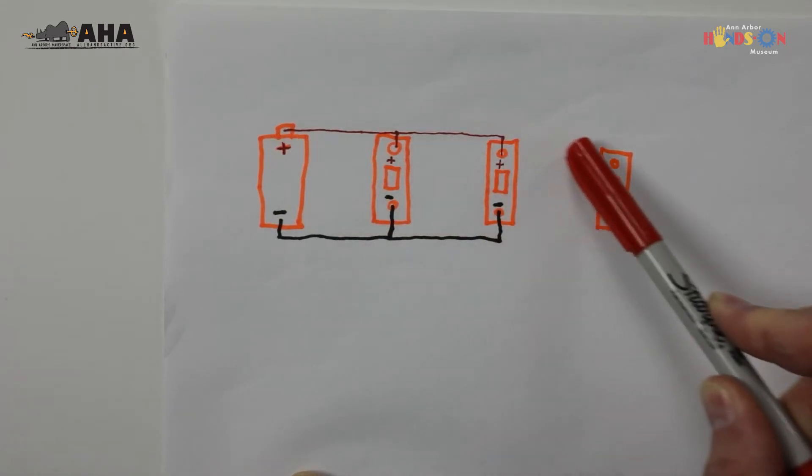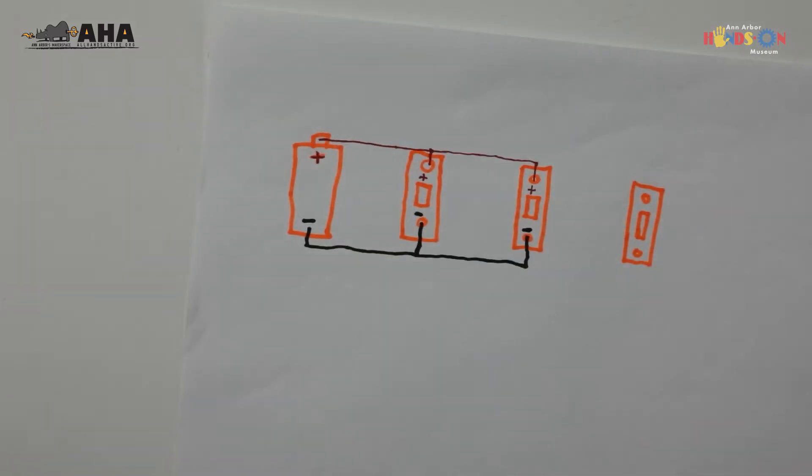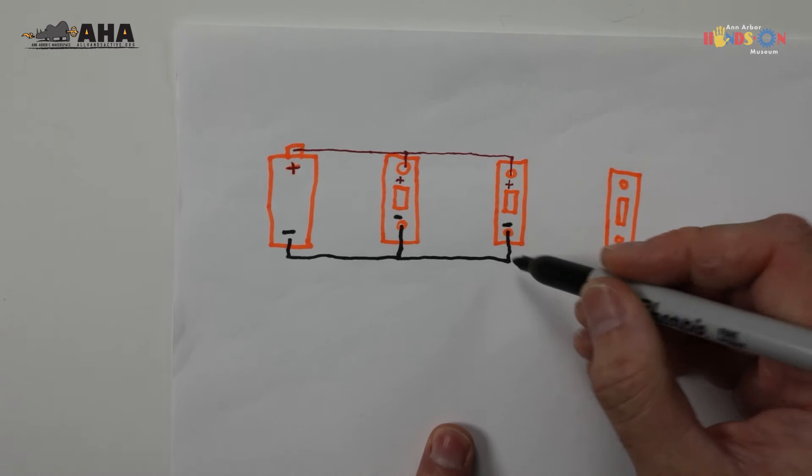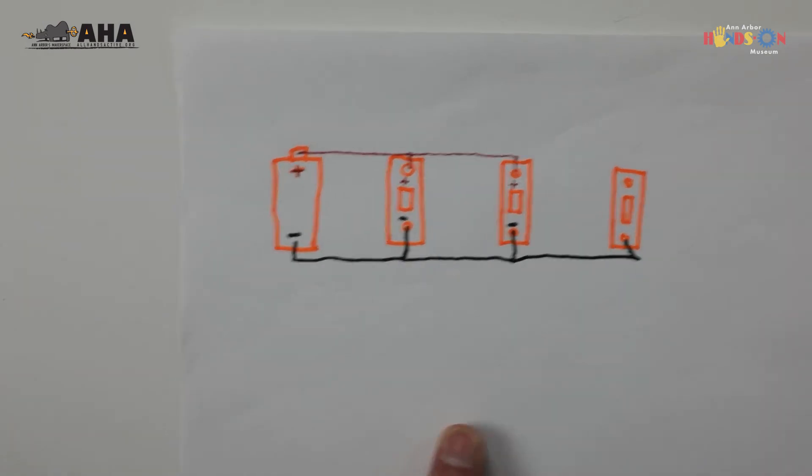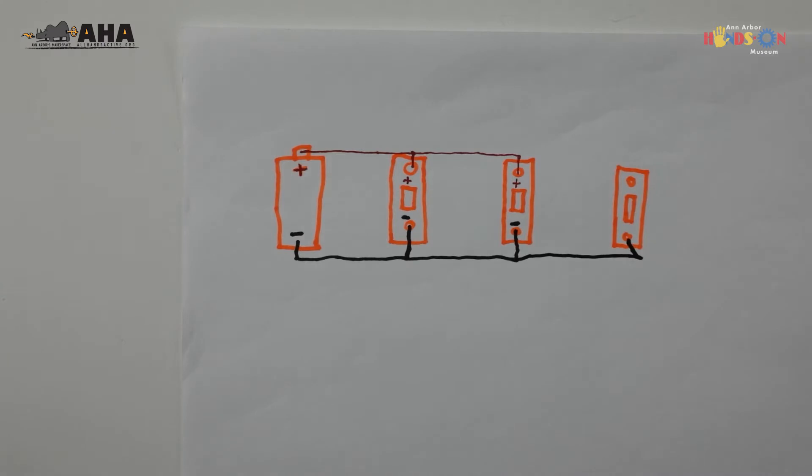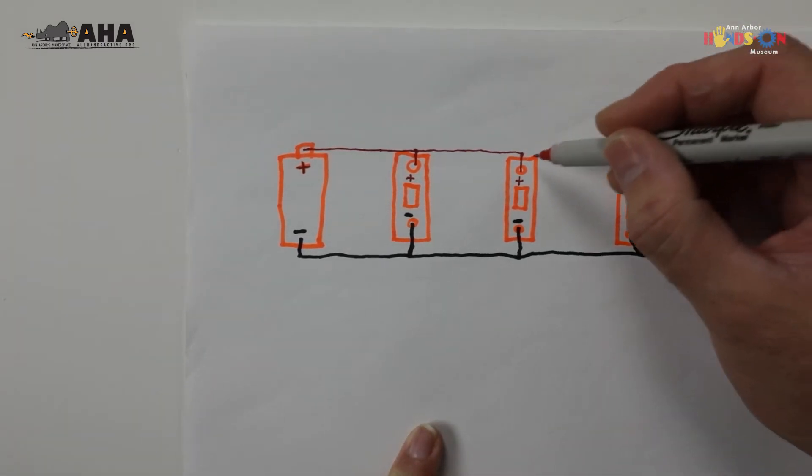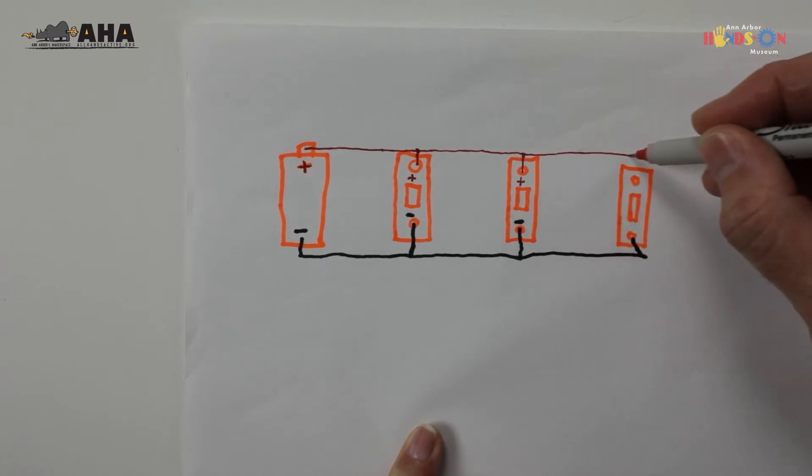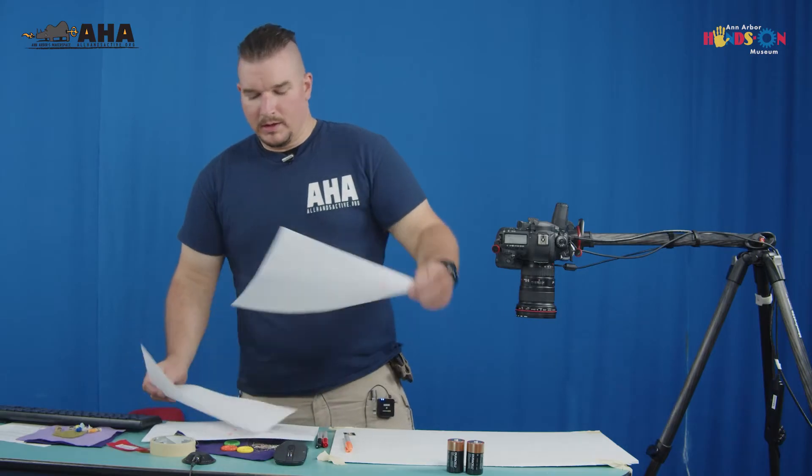So to hook up this last one over here we're going to connect this line here to that negative side, and then we're going to connect this positive one here. And now we have a full circuit—all of these LEDs will light up.